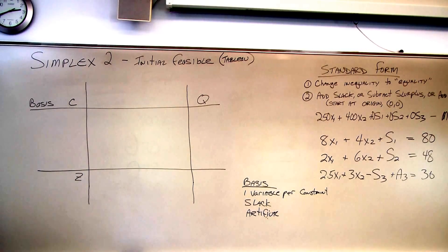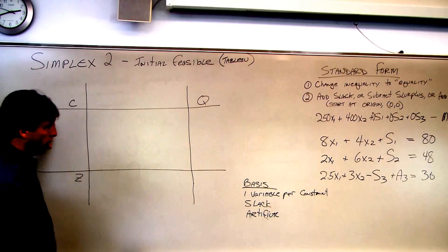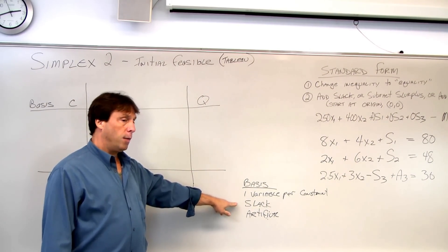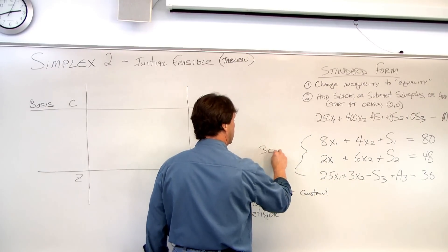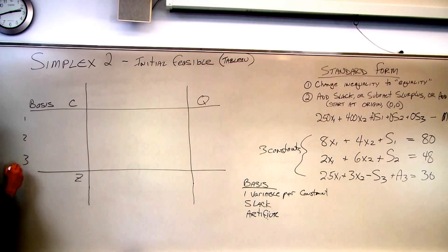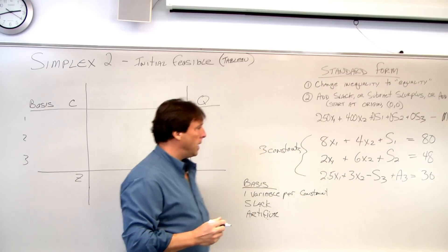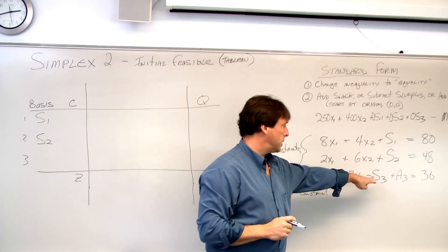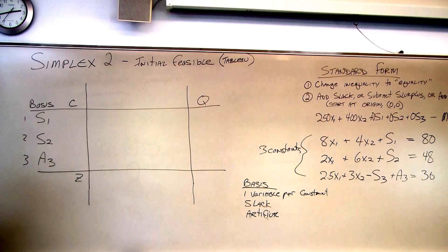The second part of simplex is we take the standard form and put it in our table. The initial table is called the initial feasible. For filling in the basis, we have a few rules: there's one variable per constraint. If there's no slack, we add the artificial. We have three constraints, so we have three basic variables in the basis. The first two are slack variables s1 and s2. For our third constraint, we don't have slack, but we have an artificial variable, so that's a3.